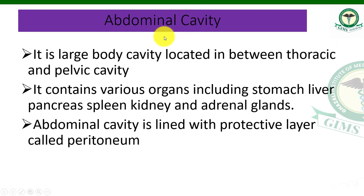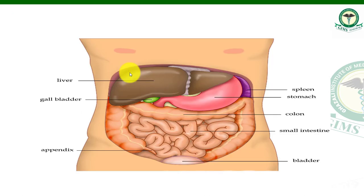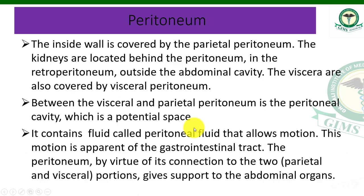Next is the abdominal cavity. It is a large body cavity located between the thoracic and the pelvic cavity. As mentioned at the start, what is found between the thoracic cavity and pelvic cavity is what we call the abdominal cavity.